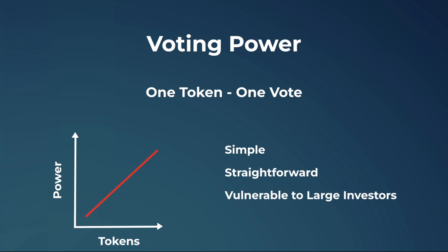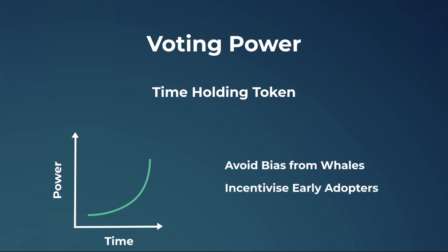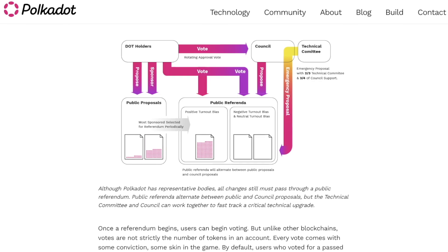Fortunately, newer projects launching governance tokens have taken this into account when creating their smart contracts, and have been able to implement solutions where rather than favoring the number of tokens held, they favor the time a certain wallet has held their governance tokens. In effect, this incentivizes early adopters who believe in the project and have been along for decision-making processes for the longest.